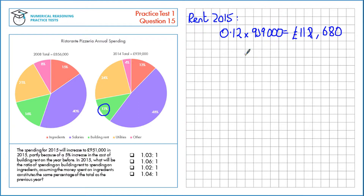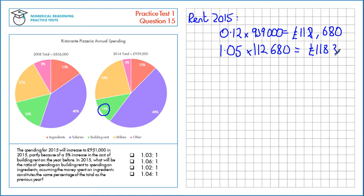That's increasing by 5%, which is the same as a multiplier of 1.05. Multiply that by £112,680, which gives us £118,314 on building rent in 2015.